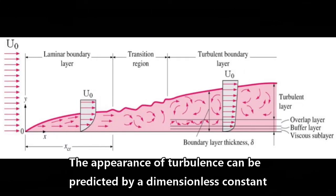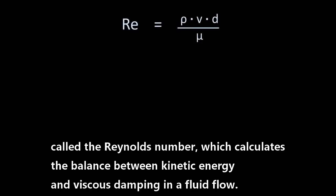The appearance of turbulence can be predicted by a dimensionless constant called the Reynolds number, which calculates the balance between kinetic energy and viscous damping in a fluid flow.